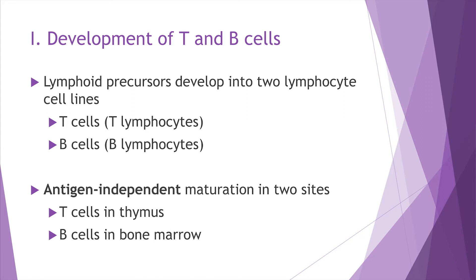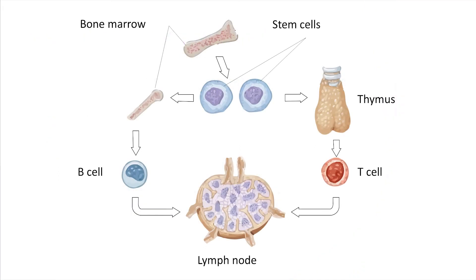The T cells and B cells are called lymphocytes and they are crucial for our adaptive immune system. Both of them are developed as lymphoid stem cells in our bone marrow. After that, the stem cells split or differentiate into two types — one goes to the thymus, the other goes to the bone marrow.